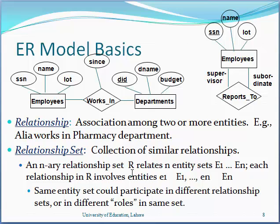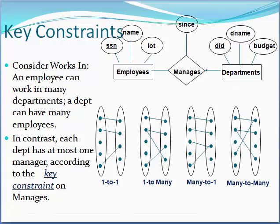A relationship is called total if all entities of that entity set may be participants in the relationship. A relationship is called partial if only some of the entities of that entity set participate. For example, the relationship between supplier and part is total if every part is supplied by a supplier, and partial if certain parts are available without a supplier.